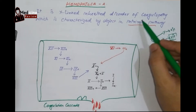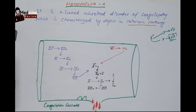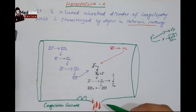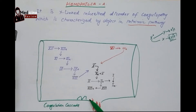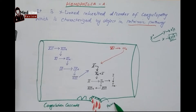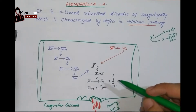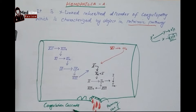Let me explain this coagulopathy and intrinsic pathway with a proper diagram. Whenever the endothelial cell of a blood vessel gets damaged — we should say a blood vessel ruptures — there is obvious bleeding. But as the endothelial cell gets damaged, platelets come and start to aggregate, forming a temporary plaque which is also called the primary clot. Whenever this primary clot is made, it starts a cascade called the coagulation cascade.